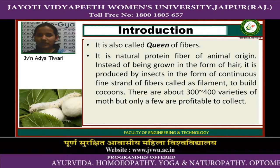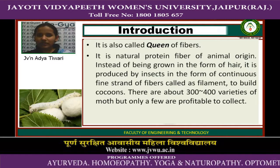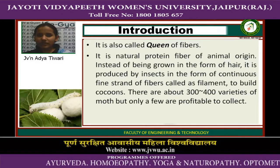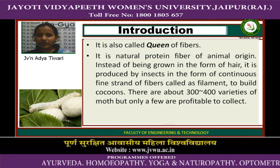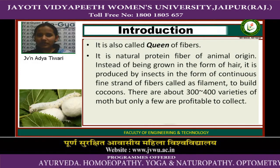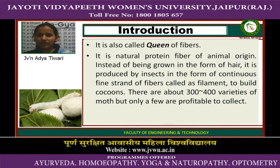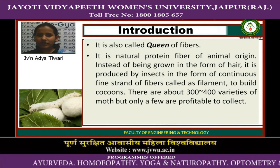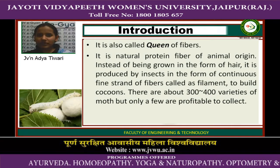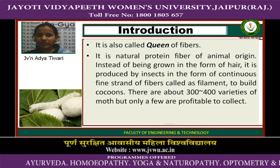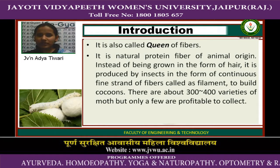First we will see what is silk fiber. Silk is a natural proteinic fiber and it is known as queen of the fiber. Instead of being grown in the form of hair, it is produced by insects in the form of continuous fine strands of fibers called filaments to build cocoons. There are 300 to 400 varieties of moths.